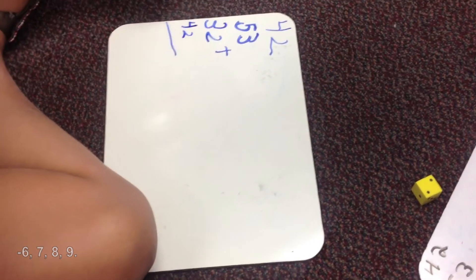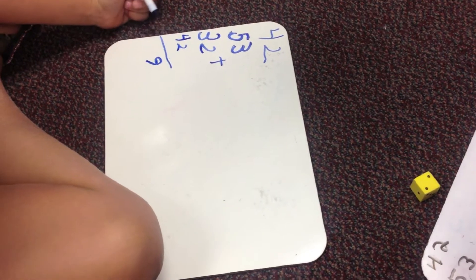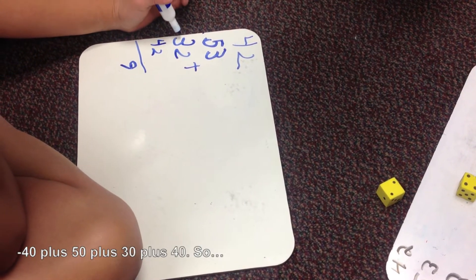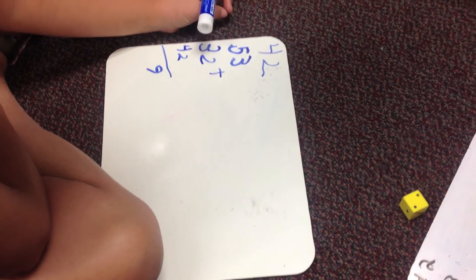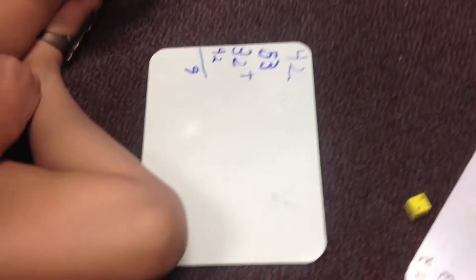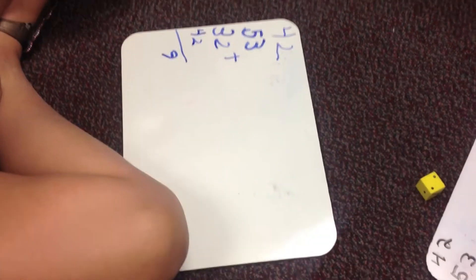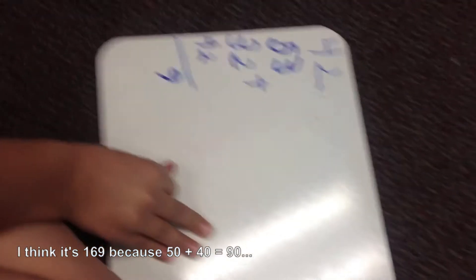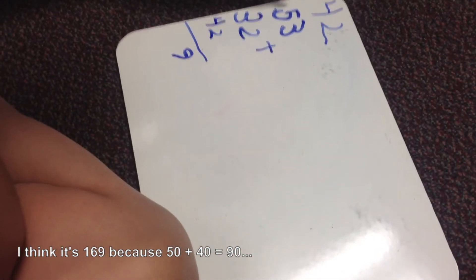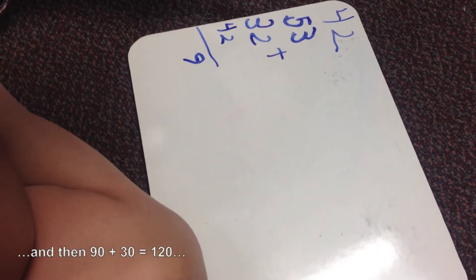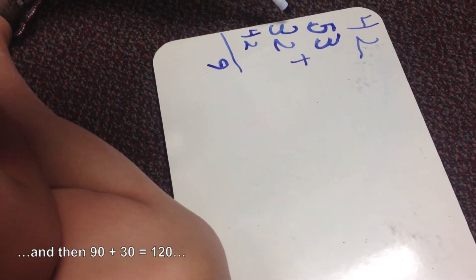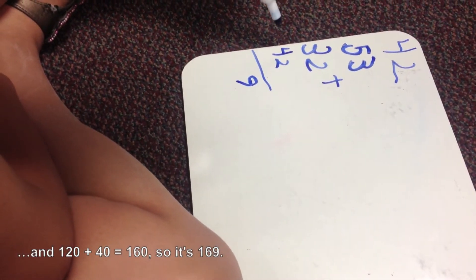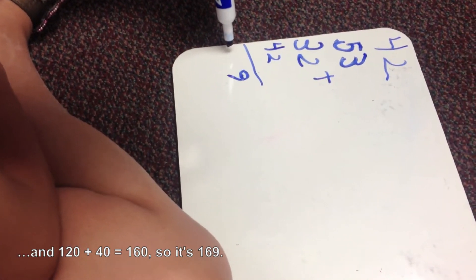6, 7, 8, 9, and then we have to do 4, 3, plus 30, plus 40. I think it's 169, because 50 plus 40 equals 90, and then 90 plus 30 equals 120, and 120 plus 40 equals 160, so it's 169.